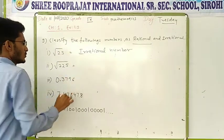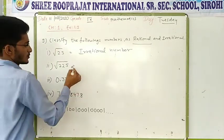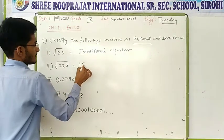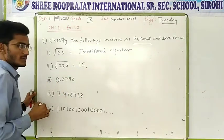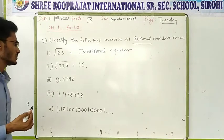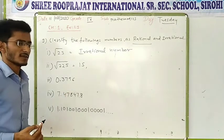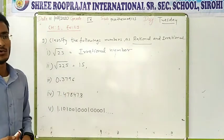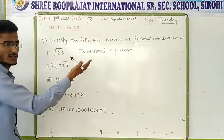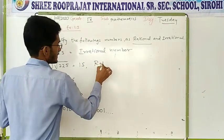Next one, root 225. Root 225 has a value of 15. If you multiply 15 by 15, you will get 225. So 15 is not an irrational number, so it is a rational number.